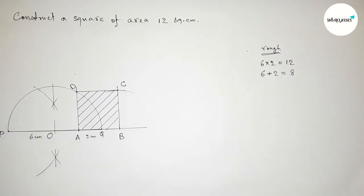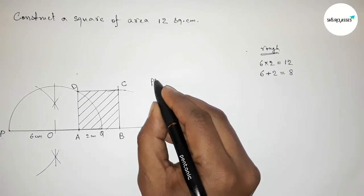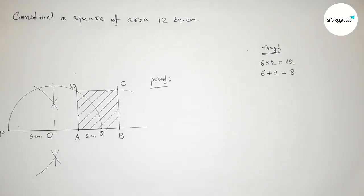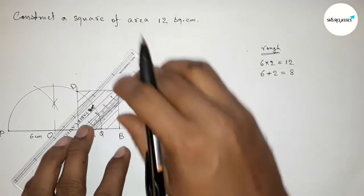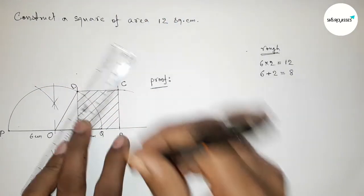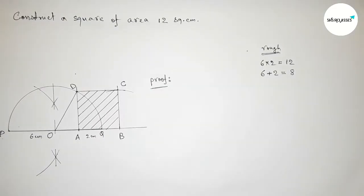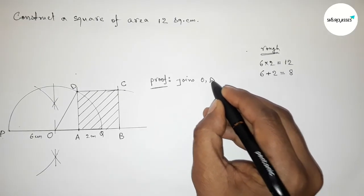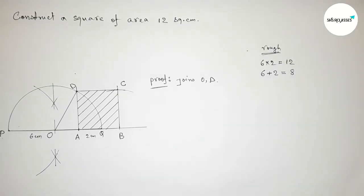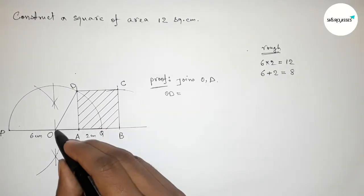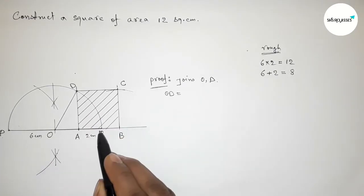This is our required square ABCD. Now I'm going to prove this. We have to join point O and point D — joining OD. The length OD must be equal to OP and OQ.